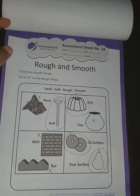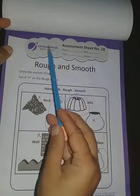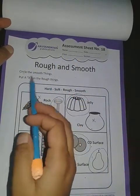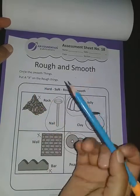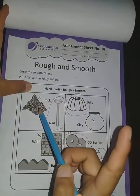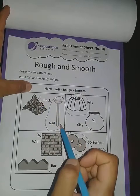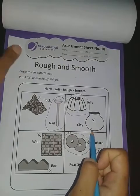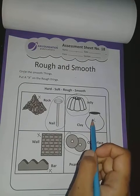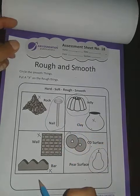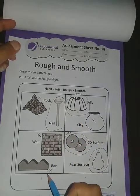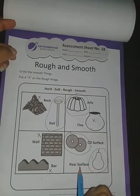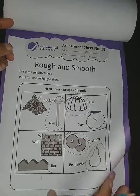Dear students, now open your social science assessment sheet number 18. Mention here your name, date, and class. Rough and smooth things — circle the smooth things and put a cross on the rough things. Rocks are rough — cross. Nail surface is smooth — circle. Jelly is smooth — circle. Clay is rough — cross. Wall and bar are also rough — cross.